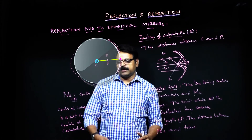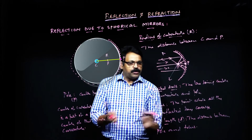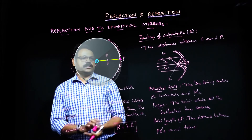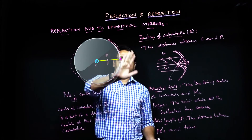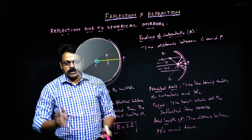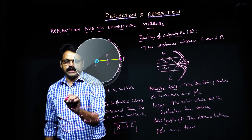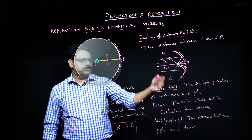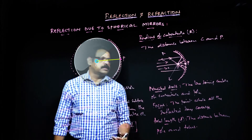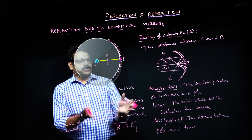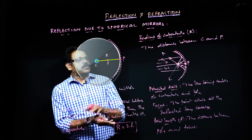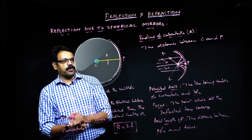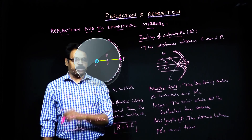These are the key terms associated with spherical mirrors. You need to remember what is pole, what is center of curvature, what is radius of curvature, and what is principal axis. After knowing these terms, we will look at the sign convention and how to solve problems related to spherical mirrors.